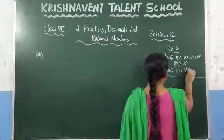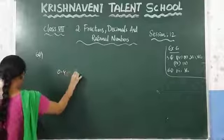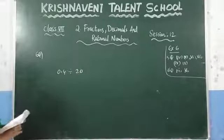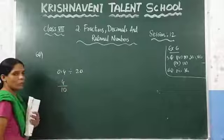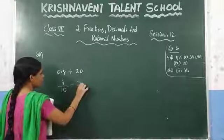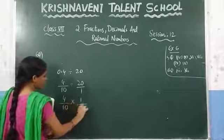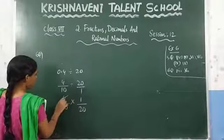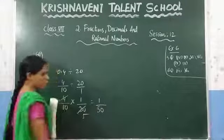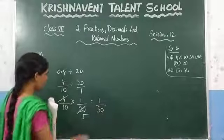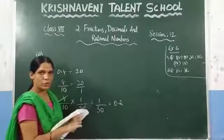The last question in this section: 0.4 divided by 20. Write 0.4 as 4 by 10, since after the decimal point one number is there. Divide by 20, written as 20 by 1. Change into multiplication: 4 by 10 into 1 by 20. Here 4 cancels, leaving 1 by 50. The value of 1 by 50 is 0.02.